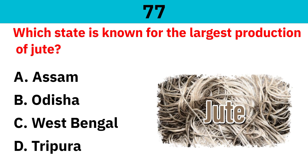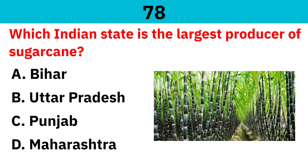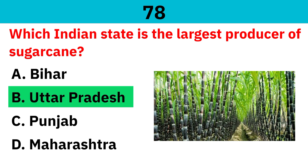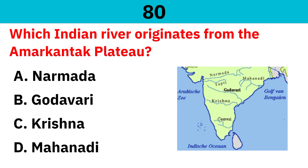Which state is known for the largest production of jute? Correct answer is West Bengal. Which Indian state is the largest producer of sugarcane? Correct answer is Uttar Pradesh. Which is the only floating national park in India? Correct answer is Loktak. Which Indian river originates from the Amarkantak Plateau? Correct answer is Narmada.